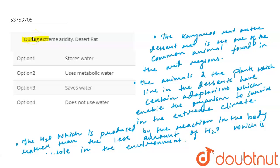So the question is, during extreme aridity, desert rat: option 1 stores water, option 2 uses metabolic water, option 3 saves water and option 4 does not use water.